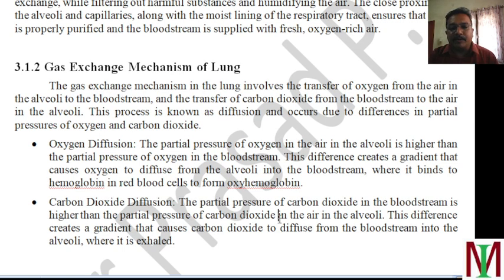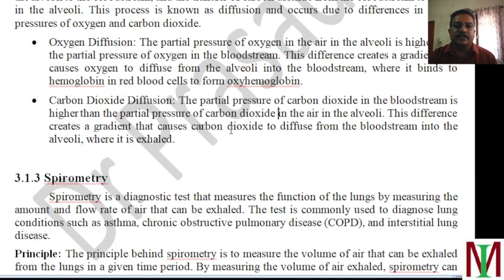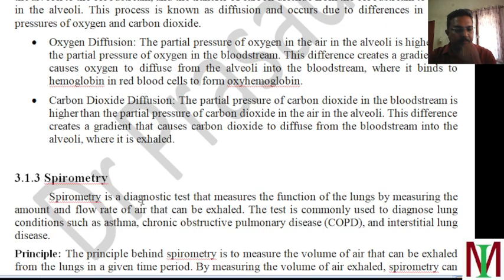Carbon dioxide — in the reverse case, the partial pressure of carbon dioxide in the bloodstream is higher than the partial pressure of carbon dioxide in the air in the alveoli. This difference creates a gradient which causes carbon dioxide to diffuse out from the bloodstream into the alveoli.